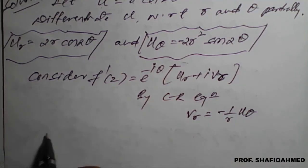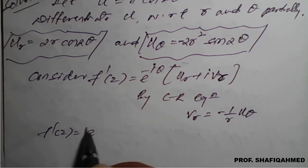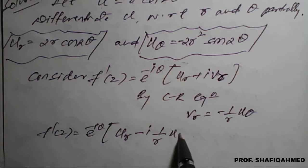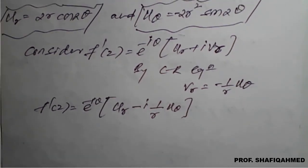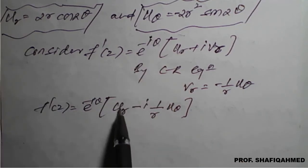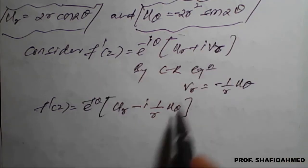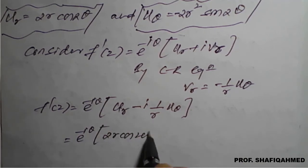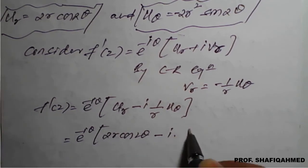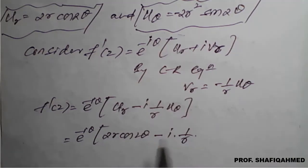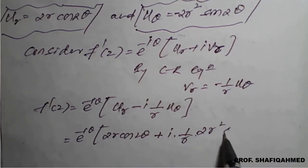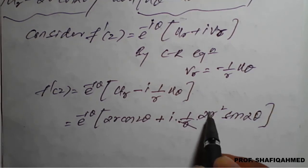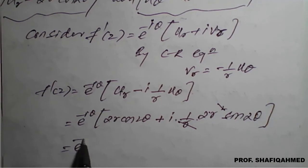Therefore f'(z) = e^(−iθ) · [u_r − i·(1/r)·u_θ]. Substituting u_r = 2r cos(2θ) and u_θ = −2r² sin(2θ): the two negatives make a plus, so it becomes e^(−iθ) · [2r cos(2θ) + i·(1/r)·2r² sin(2θ)]. The r and the (1/r) cancel, leaving e^(−iθ) · [2r cos(2θ) + i·2r sin(2θ)].